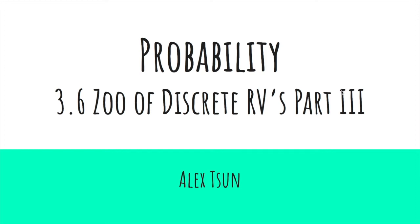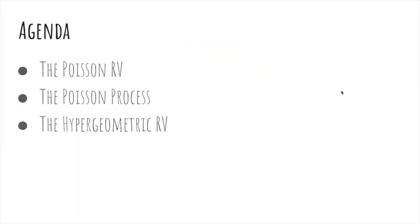In this video, we'll wrap up discrete random variables. We'll talk about the Poisson random variable, the Poisson process, and the hypergeometric random variable.